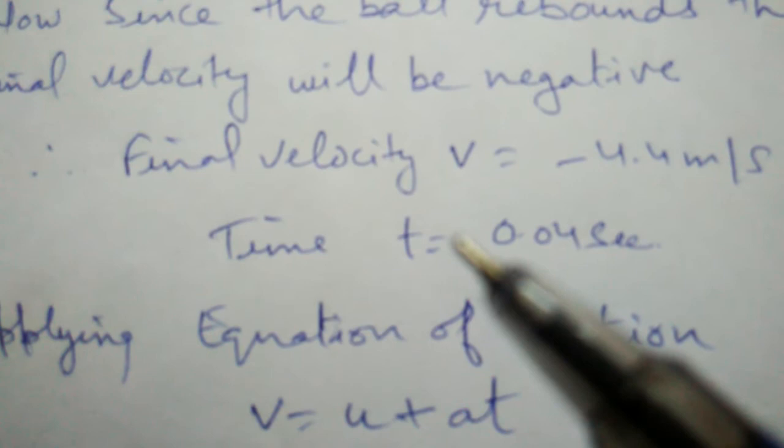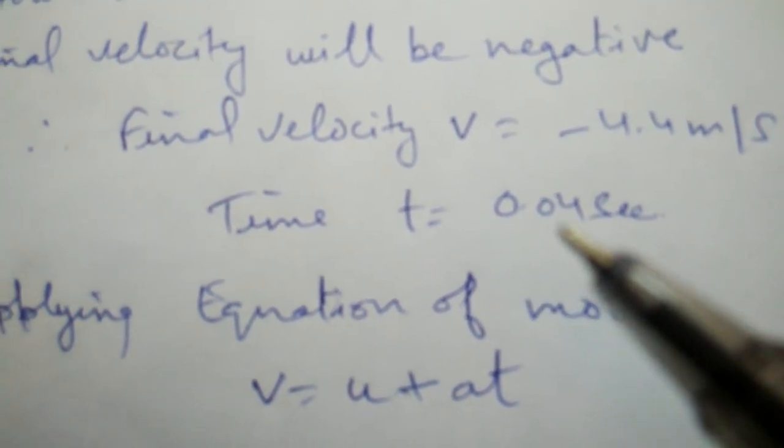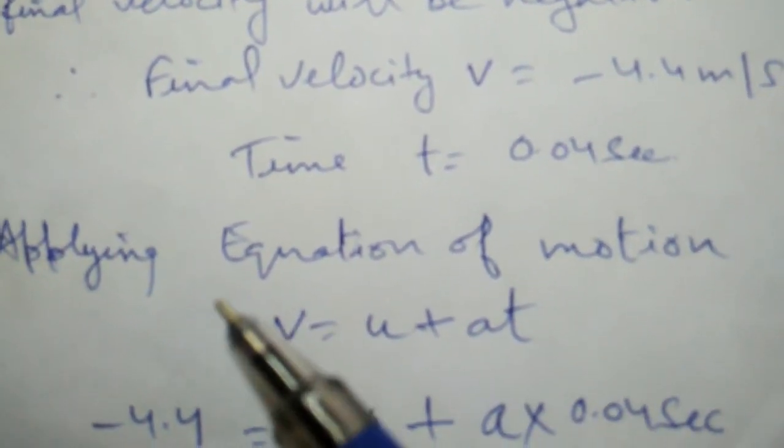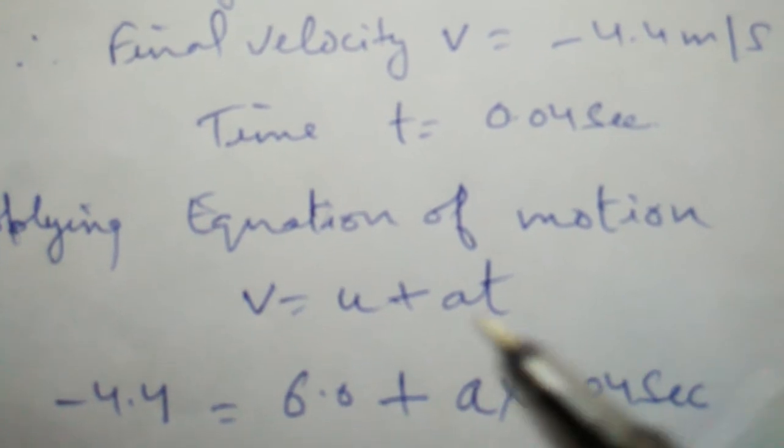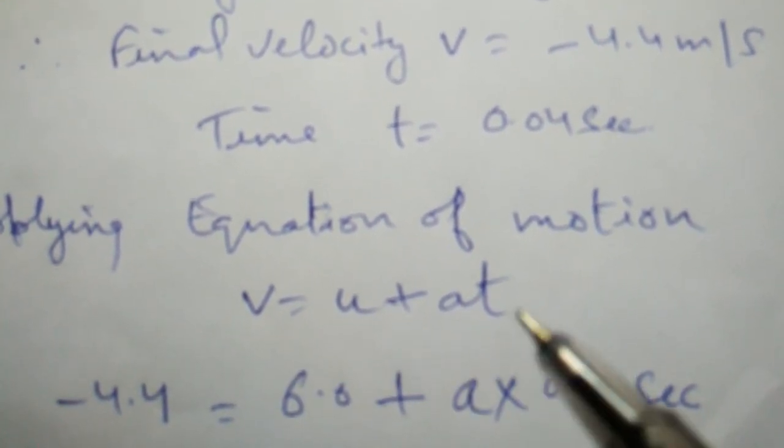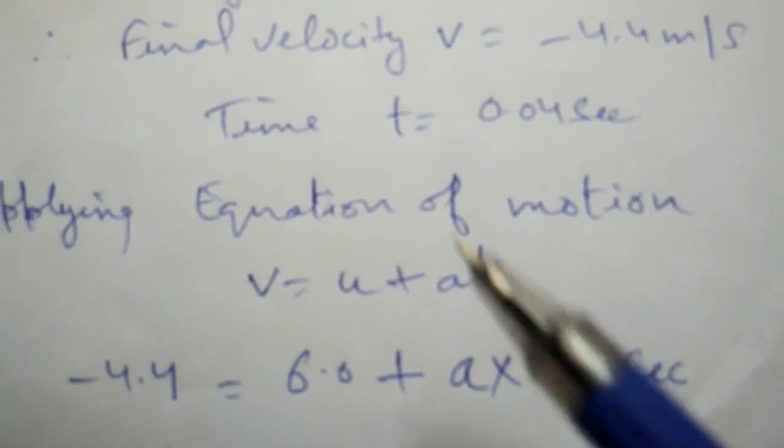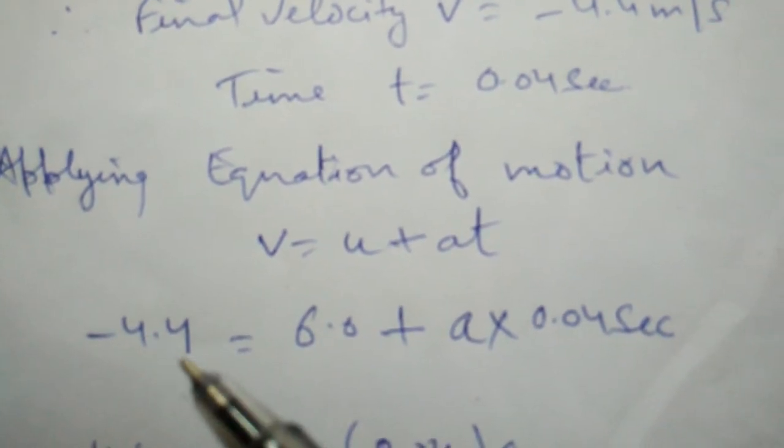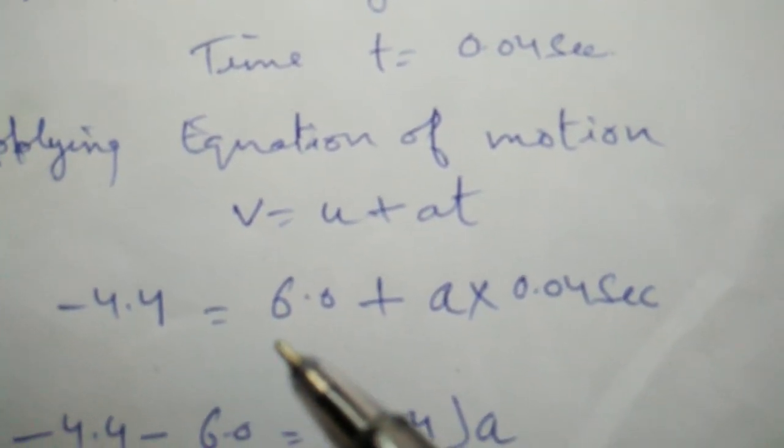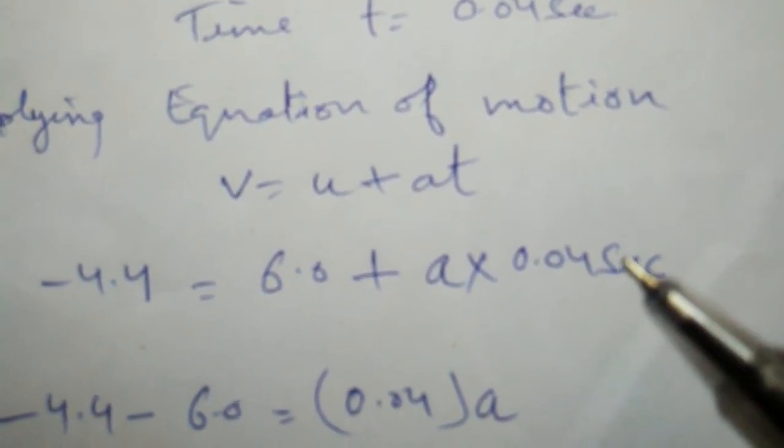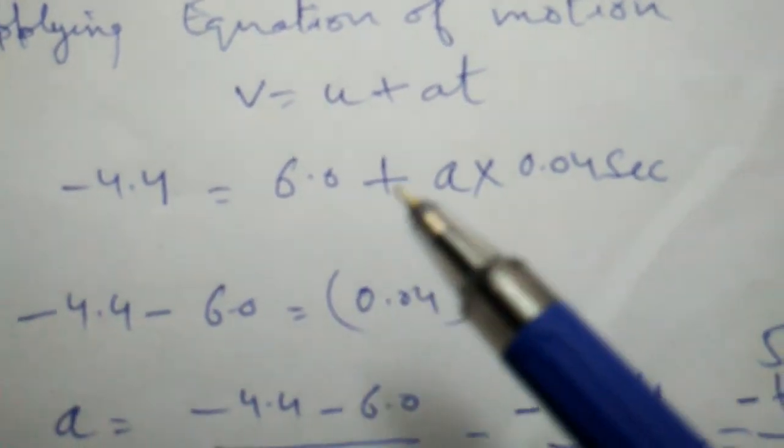So which formula will we use here? Here we will use the equation of motion that is v equals u plus at. We will put all the values given to us in this equation to find out the acceleration.